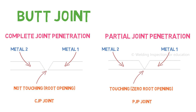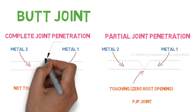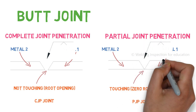Most of the connections in a pressure vessel, tanks, and heat exchangers are CJP butt joint. And most of the connections in construction industries — column to column splice, beam to beam splice, plate to plate splice — they are mostly PJP joint. It depends on the design engineer to decide if he needs PJP or CJP joint based on the design requirement, and the construction contractor needs to follow that, while the welding inspector needs to inspect based on the requirement.